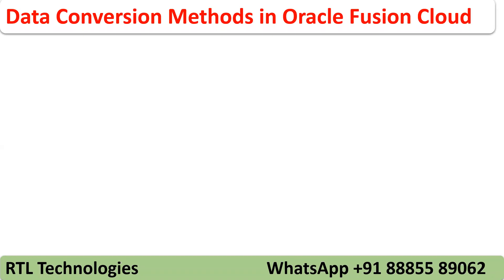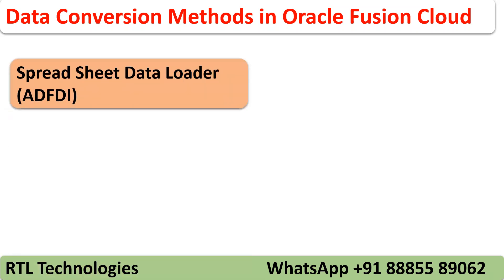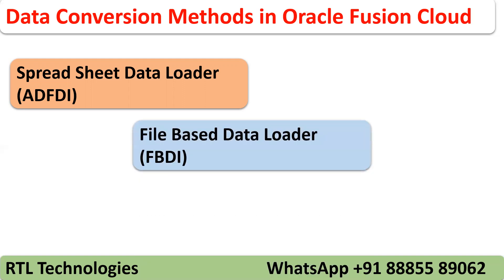What are the different methods we have in Fusion Applications for data conversion? The first one is Spreadsheet Data Loader. By using the Spreadsheet Data Loader we can load data directly into Fusion Applications. To work with the Spreadsheet Data Loader, you have to install software called ADF Desktop Integrator in your local system and connect to the application. You download a spreadsheet, enter the data, and it loads into the applications. The second one is FBDA — File Based Data Loader.